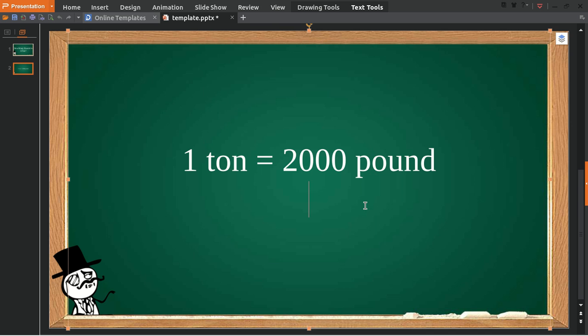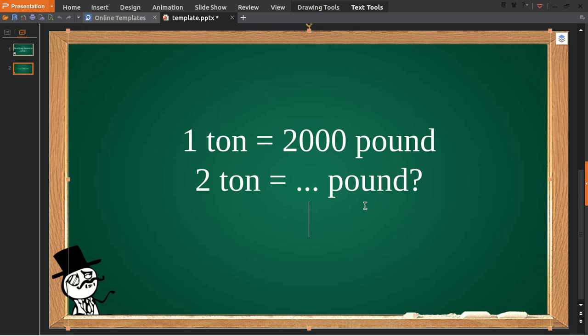Okay, in case someone asks you how many pounds do you have in two tons, this is how you answer this question. The first thing you need to do is multiply two with one ton and give it an equal sign, and then you multiply two again with two thousand pounds.